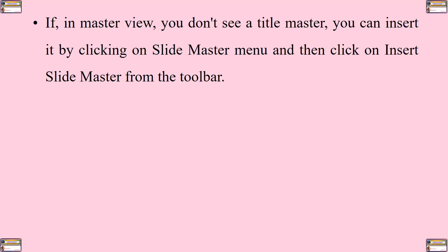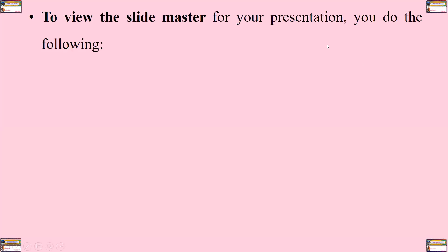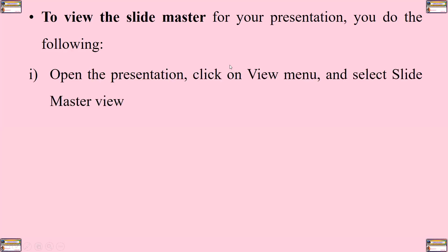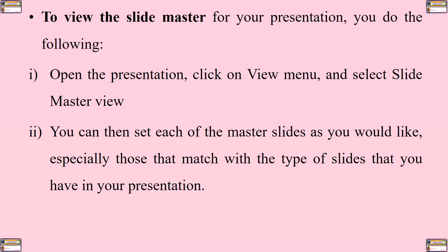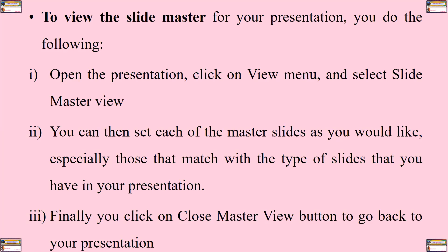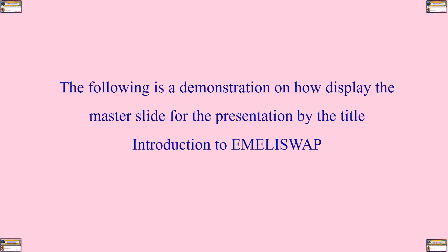If in master view you don't see the title master, you can insert it by clicking on the slide master menu and then clicking on insert slide master from the toolbar. To view the slide master for your presentation, you open the presentation, click on the view menu and select slide master view, set each of the master slides as you would like, and finally click on the close master view button to go back to your presentation. The following is a demonstration on how to display the master slide.